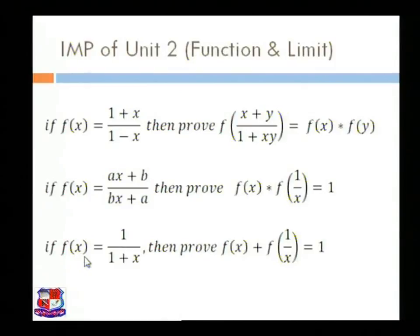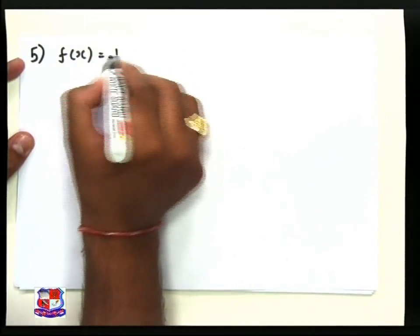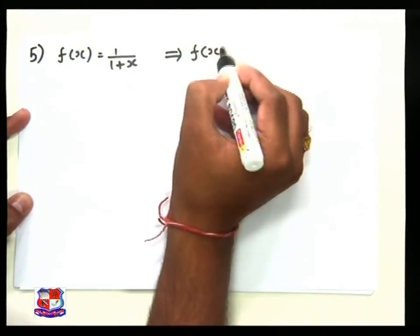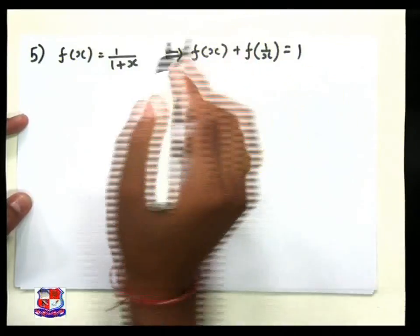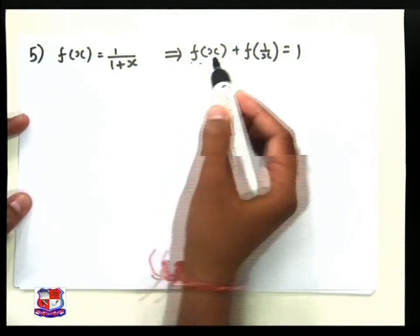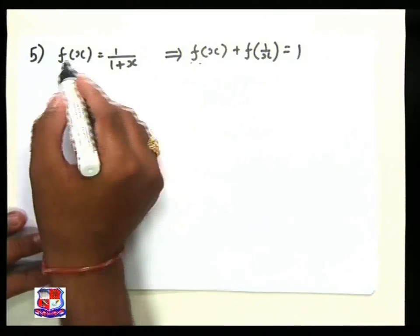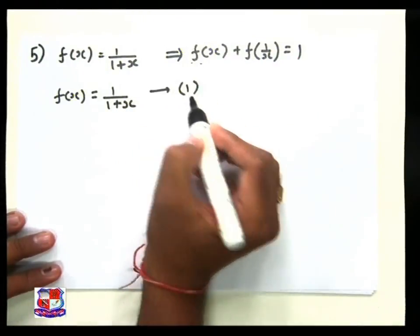Next question: if f(x) = 1/(1 + x), then prove f(x) + f(1/x) = 1. Our next question: f(x) = 1/(1 + x), and we want to prove f(x) + f(1/x) = 1. First, find f(x): f(x) = 1/(1 + x) — take this as equation number 1.